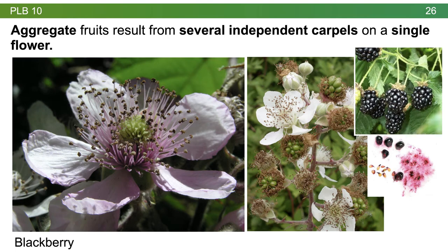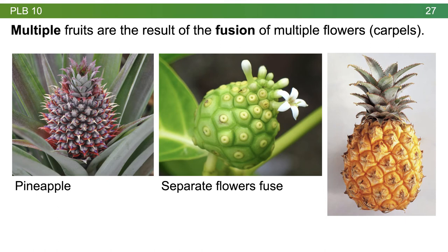A multiple fruit is the result of the fusion of multiple flowers, so multiple independent carpels come together and fuse. The classic example is a pineapple — on a pineapple you see several independent flowers each with its own carpel. When these get fertilized, all of the independent flowers eventually fuse together. The independent carpals' ovaries continue to ripen and grow together, and those husky bits on the outside of a pineapple are the remains of the flowers.